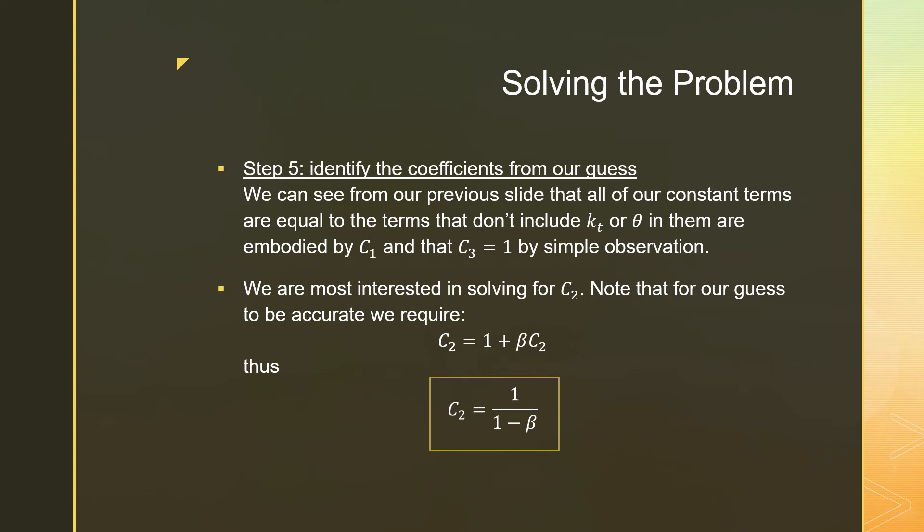Note, for our guess to be accurate, we require C2 is equal to 1 plus beta C2. With a little bit of rearranging, we know that C2 is equal to 1 over 1 minus beta. So what's important here and what's really novel here is that this is the same as our deterministic case. This is the same coefficient estimate from our deterministic case. I'm just saying that a second time.